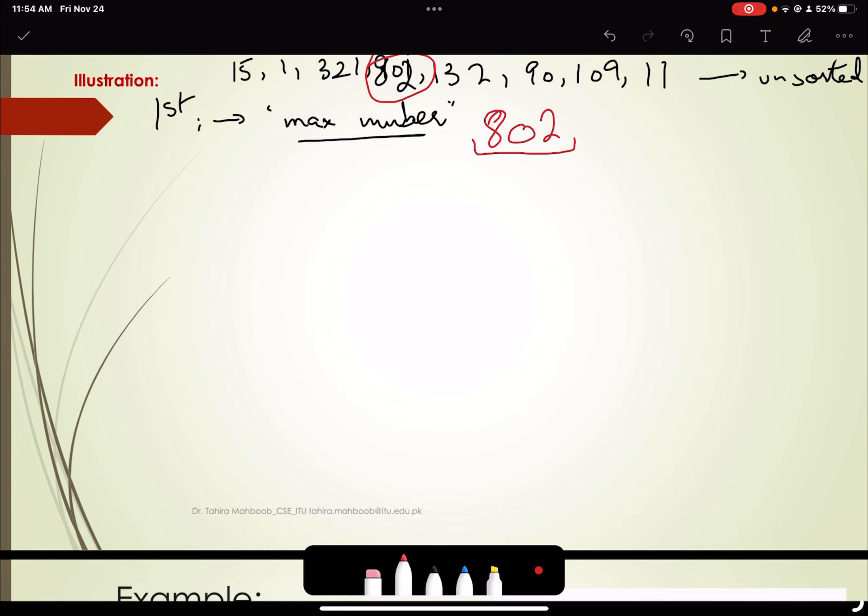And then we find, in the second step we find the number of elements in the maximum number.